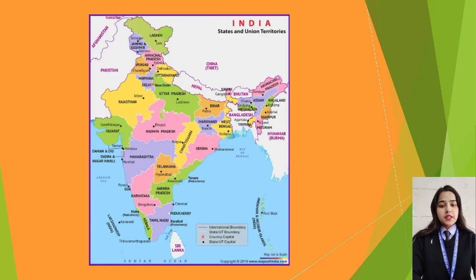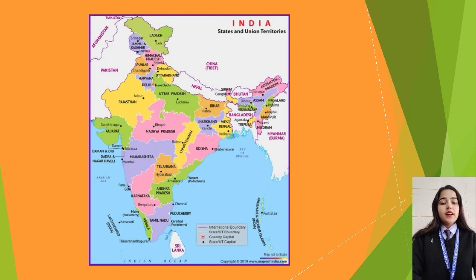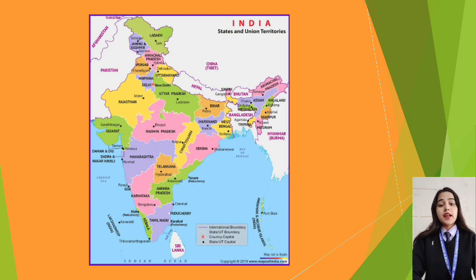Now look at this picture. This is the map of our India. The map tells us about our capitals, our states, our districts, and much more.